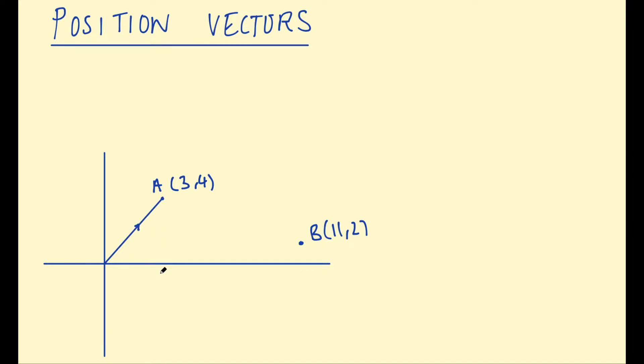And what position vectors allow you to do—this is the simple but important idea that I was talking about—is if you have two points and their position vectors, then you can find the vector from point A to point B using the triangle law. So we learn about the triangle law in GCSEs.